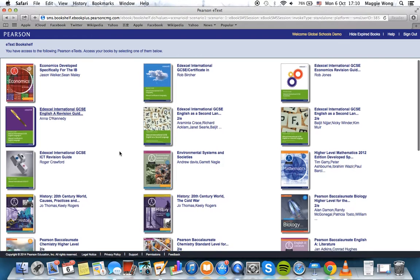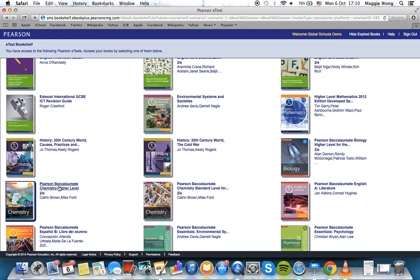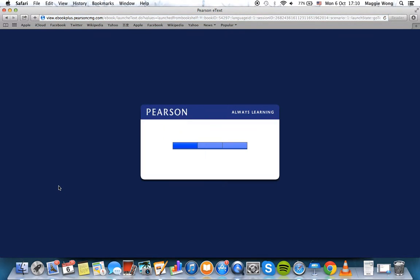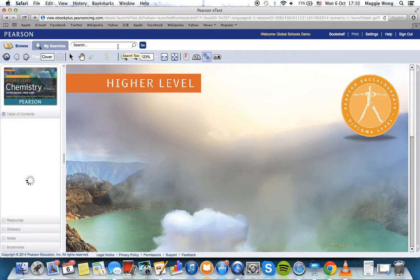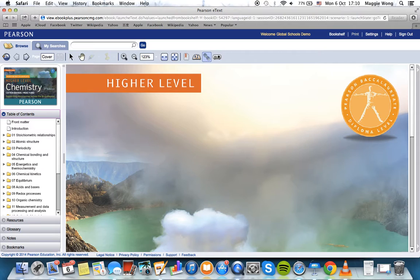We'll be looking at the Pearson Baccalaureate Chemistry Higher Level text. Once you log in, locate that title and load that book. You can use the search field at the top of the screen to help you navigate the textbook. For example, I'm going to type in fatty acids and see what comes up.